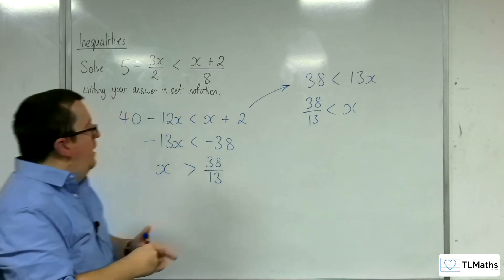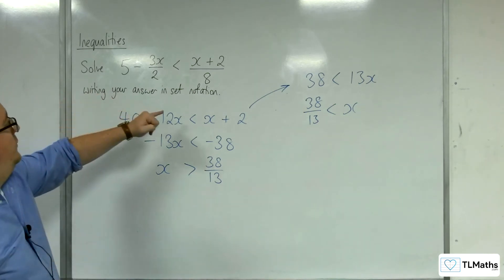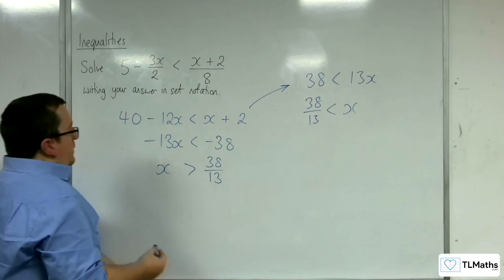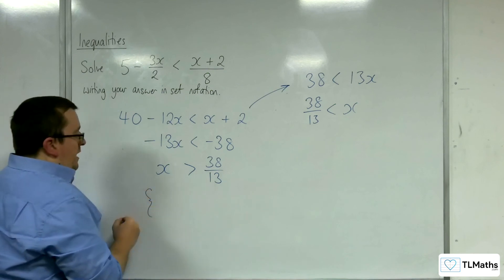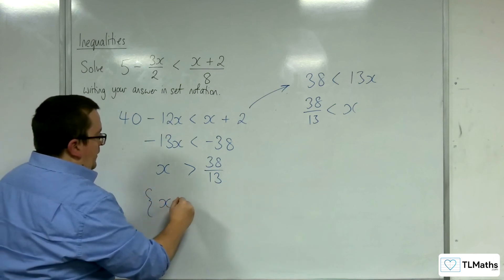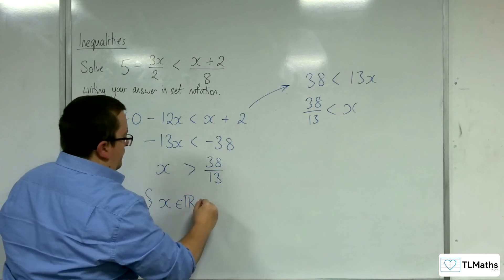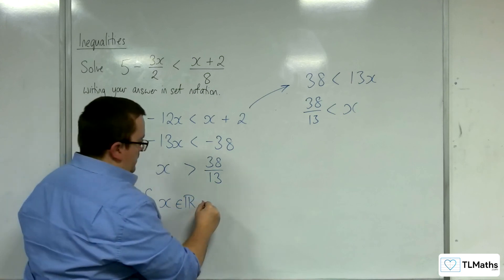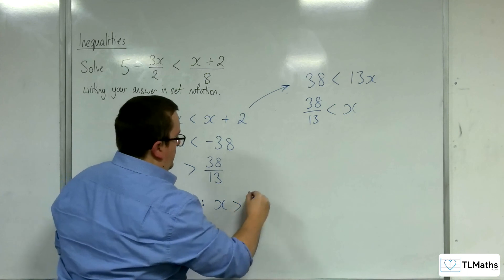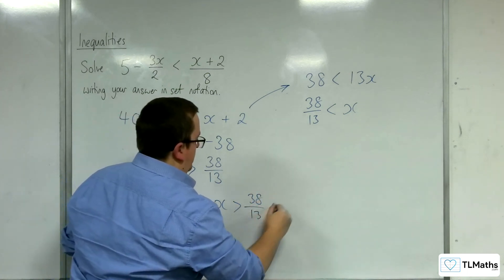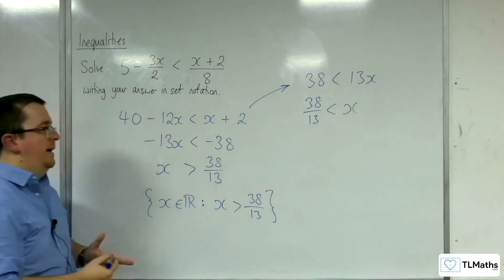Either method works. Now, the question asks us to write our answer in set notation. We need to put that in a curly bracket: x belongs to the real numbers, such that (that's a colon there) x > 38/13, and close the curly bracket. And we are done.